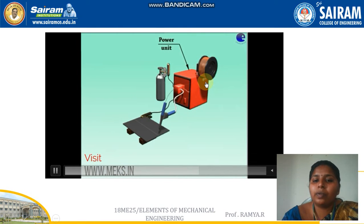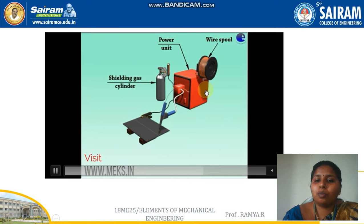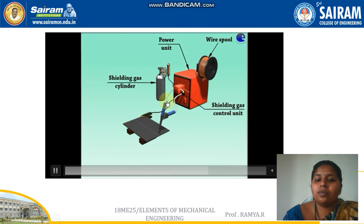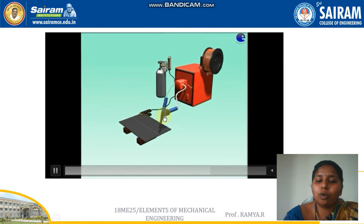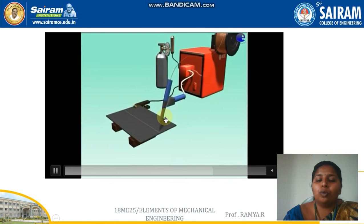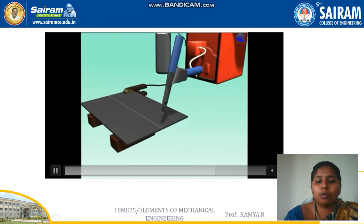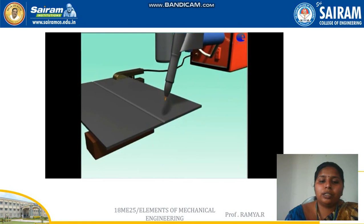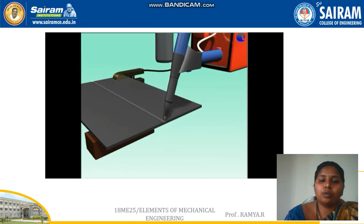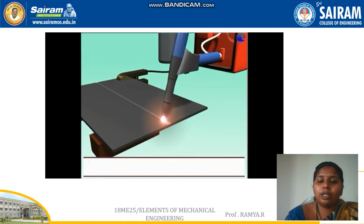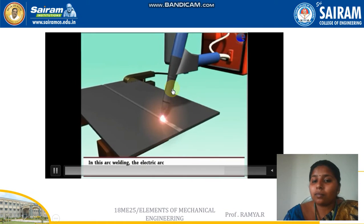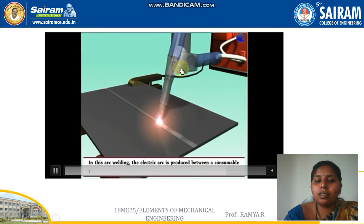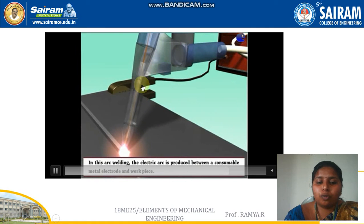There is an arrangement attached to the power source to feed the electrode. The electrode wire is wound on a roller and fed inside the electrode holder using two rollers. When the rollers rotate in opposite directions, they feed the electrode wire through.